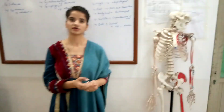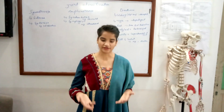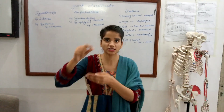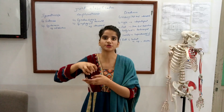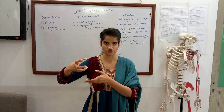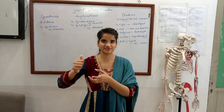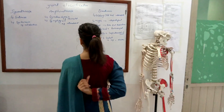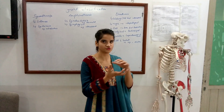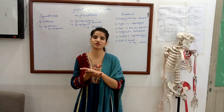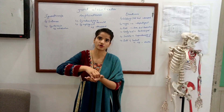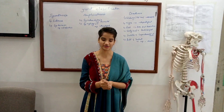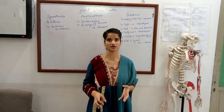Then, symphysis — the other type of amphiarthrosis. In symphysis, there is a thin cartilage and in between the bones there is a fibrocartilage. Its example is the intervertebral joint. We have vertebrae in the center, and the joints formed between vertebrae involve a fibrocartilage disc present inside. That intervertebral joint is of a symphysis nature.